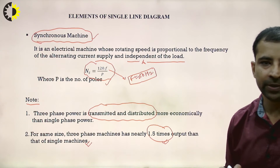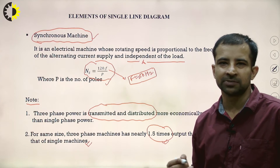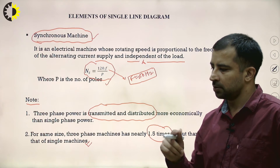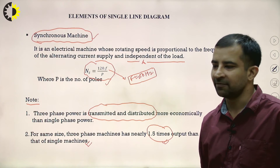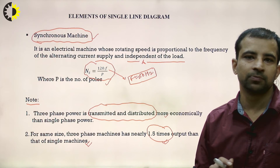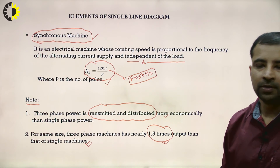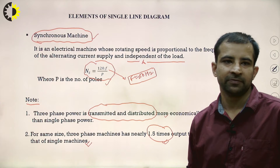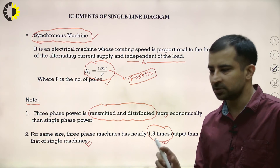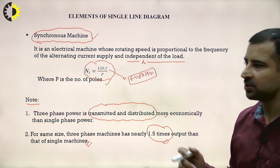From an interview or exam perspective, remember: three-phase power is transmitted and distributed more economically. If you want to transmit the same power using single-phase, it will be more costly. Also, for the same machine size, a three-phase machine gives 1.5 times the output of a single-phase machine.